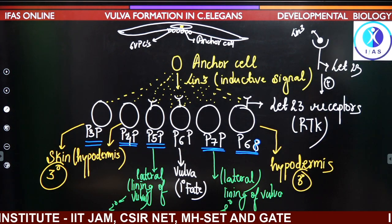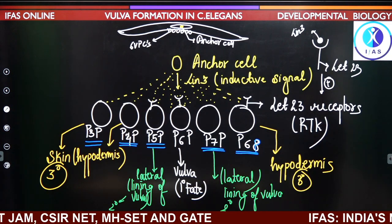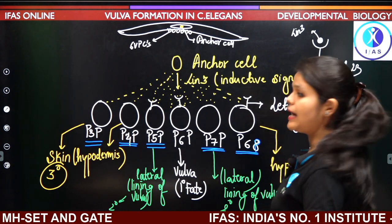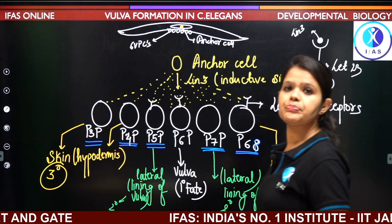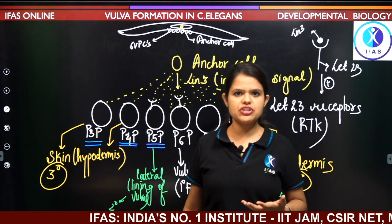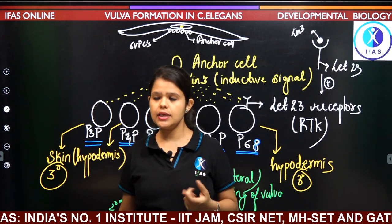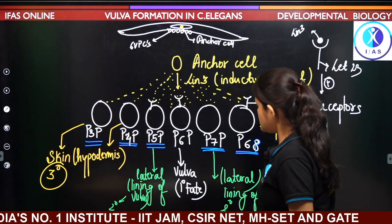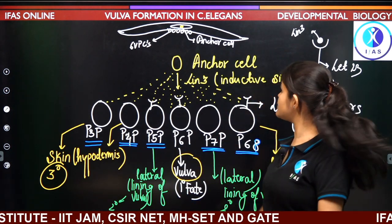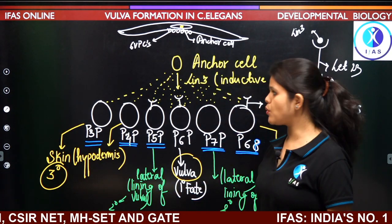Looking at the signaling pathway: LIN-3 interacts with LET-23, activating the MAPK pathway, which leads to expression of proteins triggering vulval formation. The vulva formation is due to the inductive signal of LIN-3. But how are the lateral vulval precursor cells formed? They are formed due to lateral inhibition.